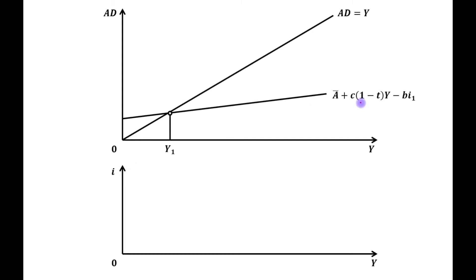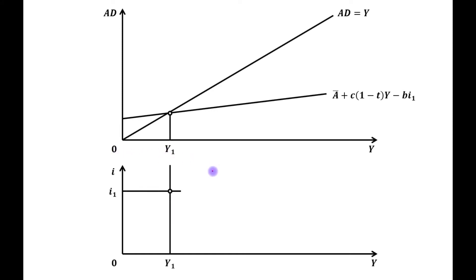The initial AD curve is this one, and this is our 45-degree line. This is the initial equilibrium point, and the initial equilibrium level of output is OY1. We have shown these combinations in the lower panel, where OY1 is the initial equilibrium level of output and OI1 is the initial equilibrium level of interest rate.